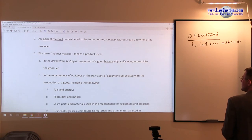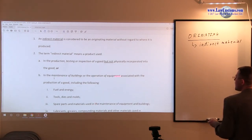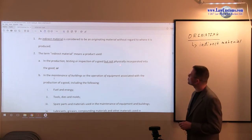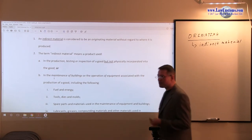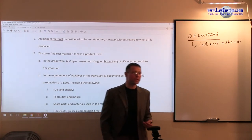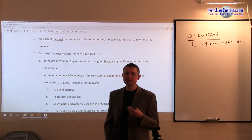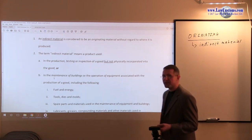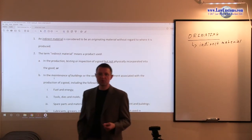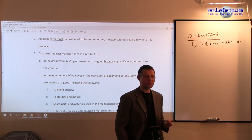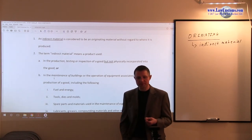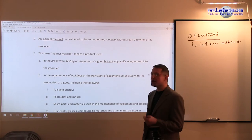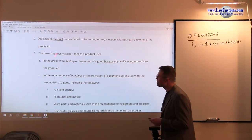First, indirect equals originating. The term indirect material means goods used in the production, testing, and inspection of the good, but not physically incorporated — that is the buzzword: not physically incorporated. So if you use a chemical substance to create a reaction and make a new compound, that is incorporation. However, if you use a chemical kit to test properties after that reaction, that is not physically incorporated — that is indirect, and it qualifies as testing and inspection.